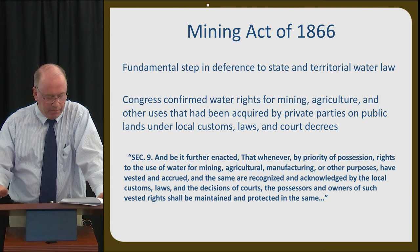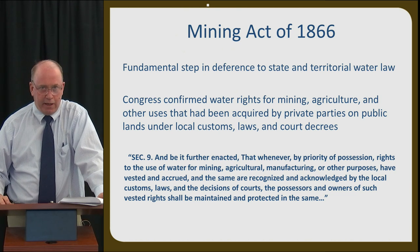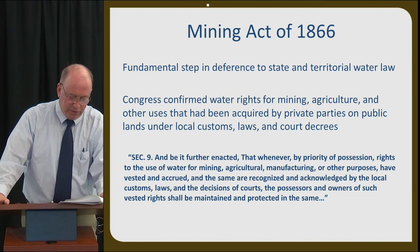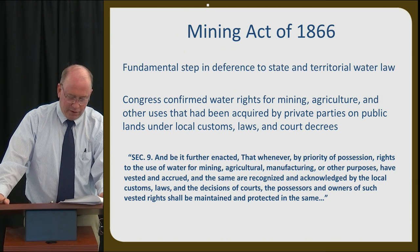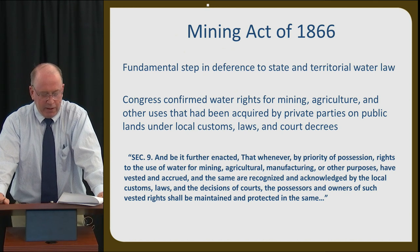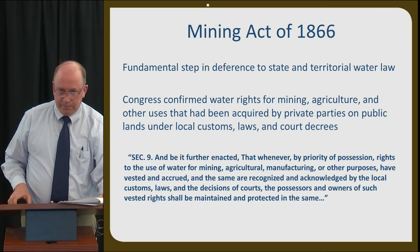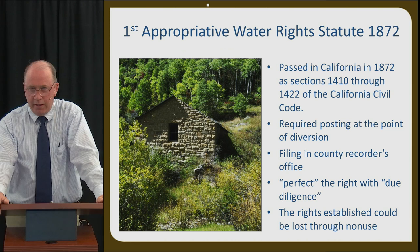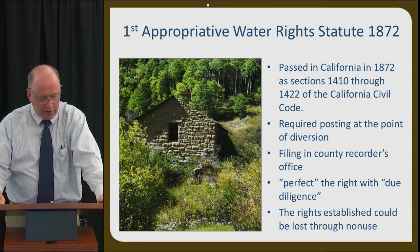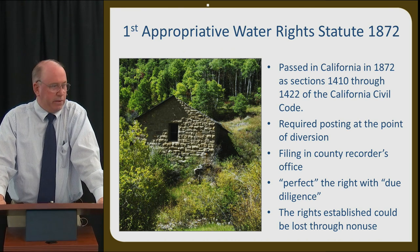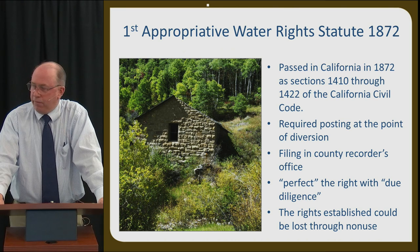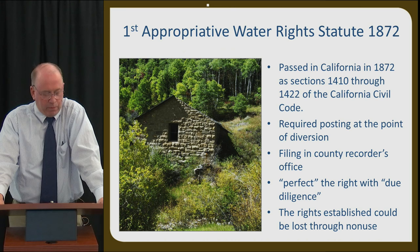Congress took a fundamental step in deference to state and territory water law with the passage of the Mining Act of 1866. Under this law, Congress confirmed water rights for mining, agriculture, and other uses that had been acquired by private parties on public lands under local customs, laws, and court decrees — even though many appropriators were trespassers on federal land. The first appropriative water rights statute was passed in California in 1872. It allowed for creation of such rights by posting at the point of diversion a document stating the intended amount of the right and its purpose of use, filing for the right in the county recorder's office, and taking the steps necessary to perfect the water right — to put it to beneficial use with due diligence.